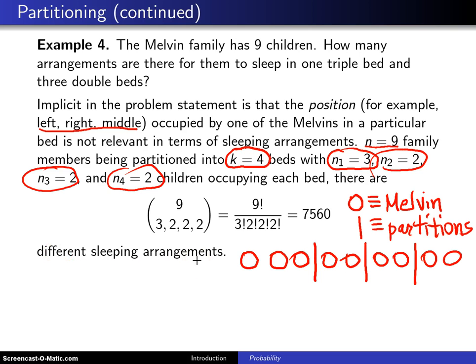So this could go on for quite a while. And there is another way of solving this problem. You could say when you're deciding how many go into the triple bed, there are nine choose three different ways of doing that. Remember the order within the triple bed is not relevant here.